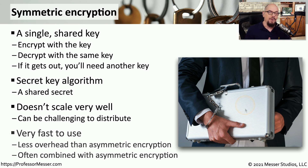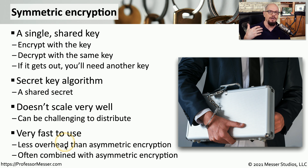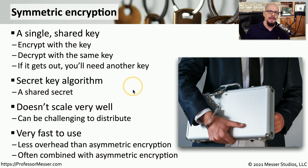This means we have to find other ways to share this key so that we can use symmetric encryption. One way to get around this scalability problem is to use asymmetric encryption. The problem, though, is that asymmetric encryption requires more overhead and more CPU work. Symmetric encryption requires relatively fewer resources than asymmetric encryption. Often you'll see the two combined, where asymmetric encryption is used to transfer a symmetric key to someone else — those two algorithm types are frequently used in conjunction with each other.